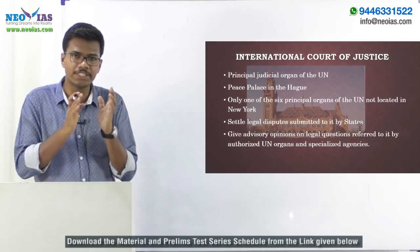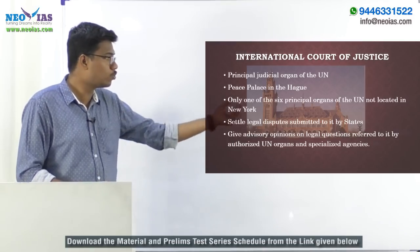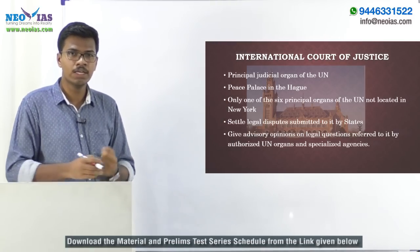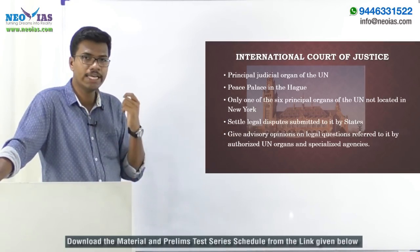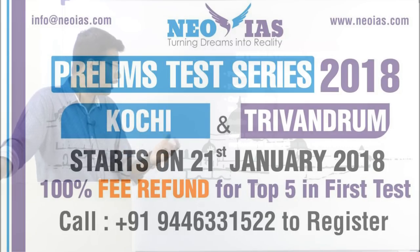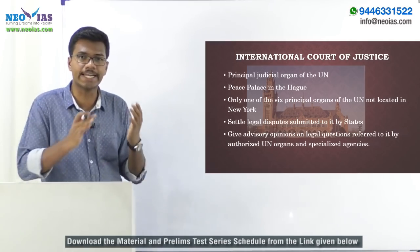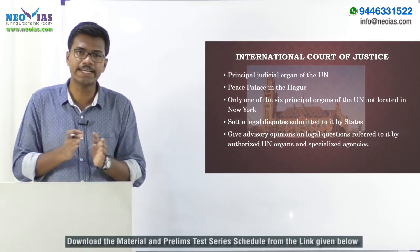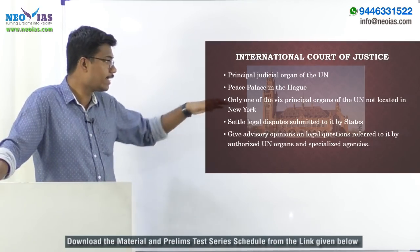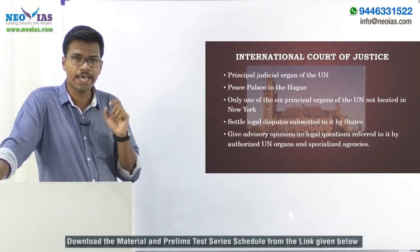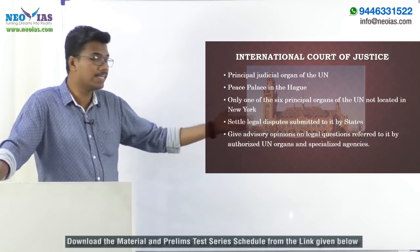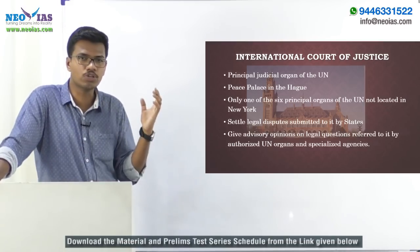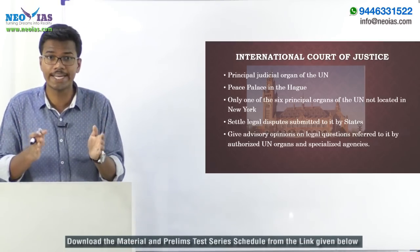The role of the International Court of Justice is to settle legal disputes submitted to it by states. Additionally, the ICJ gives advisory opinions on legal questions referred to it by authorized UN organs and various specialized agencies of the United Nations.